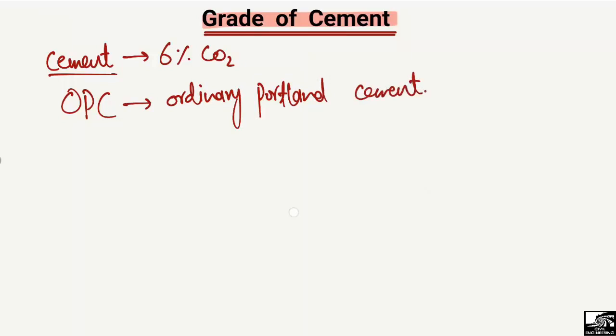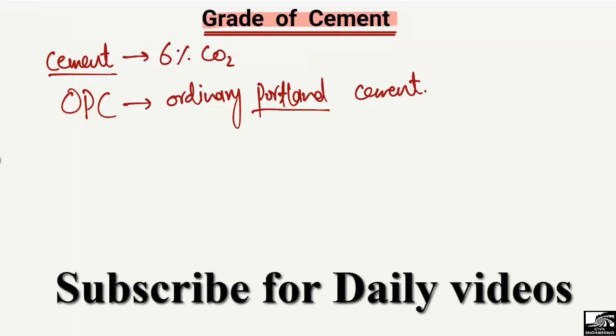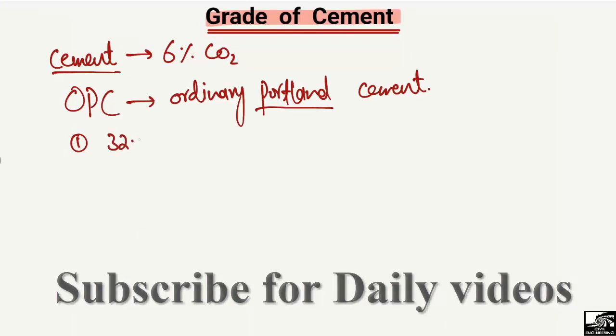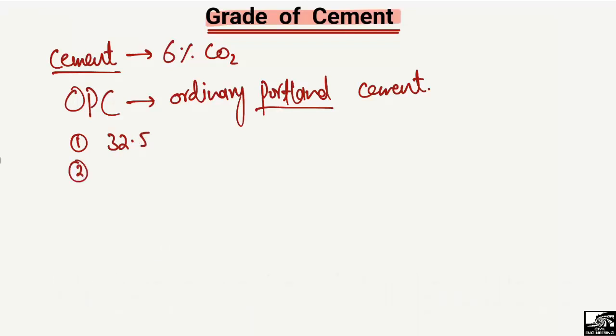OPC was discovered by scientist Portland. So now, how do we define the different grades of cement? We have three different grades: first is the 32.5 grade, second is the 42.5 grade of cement.